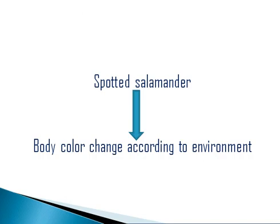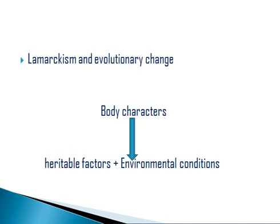Kammerer also performed experiments on spotted salamanders. He provided different environments — some with black surroundings and some with yellow surroundings. The salamander changed its body color according to the environment: if the environment was yellow, the body color changed to yellow. These characters were also inherited and transmitted to offspring, and the offspring showed the same body color that was present in their parents.